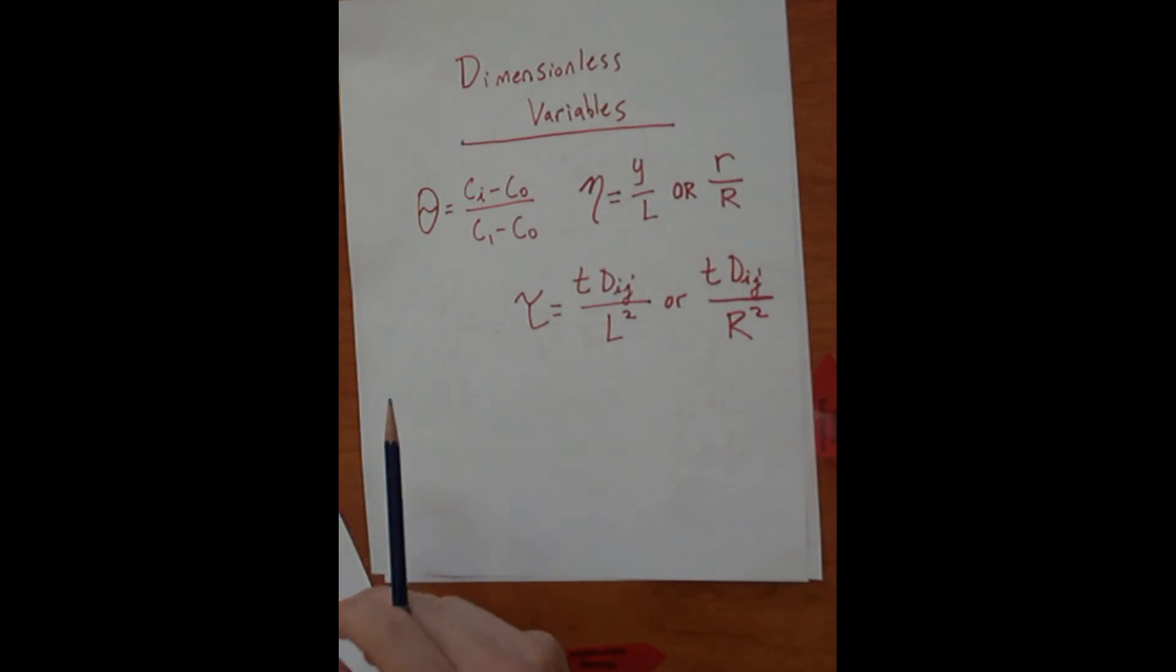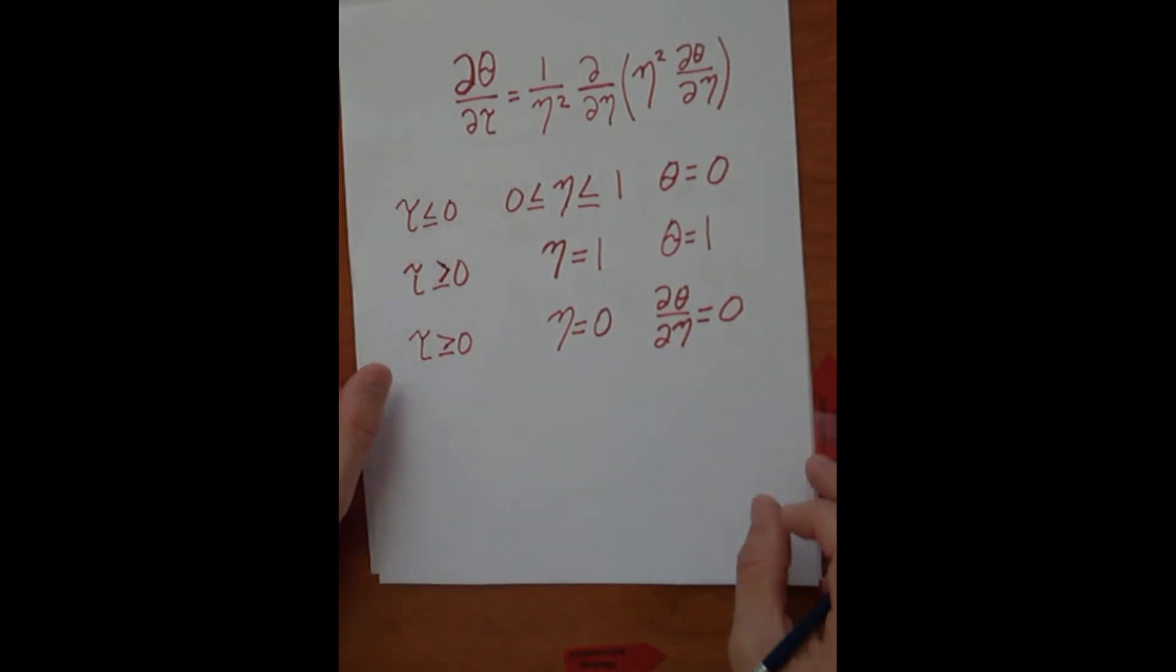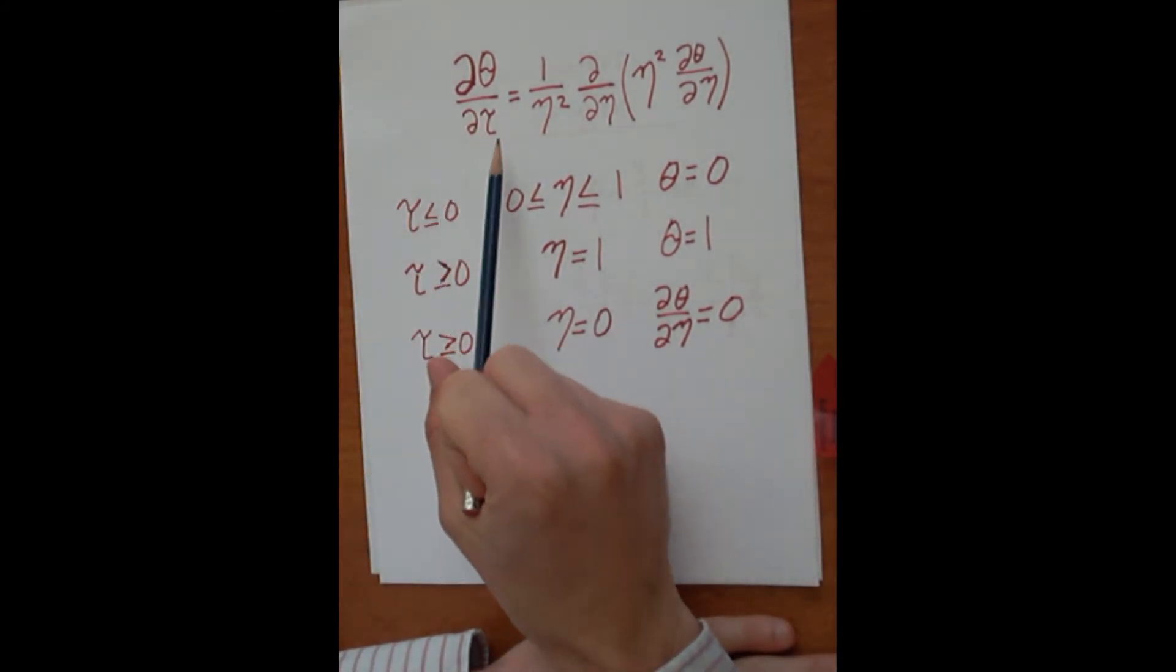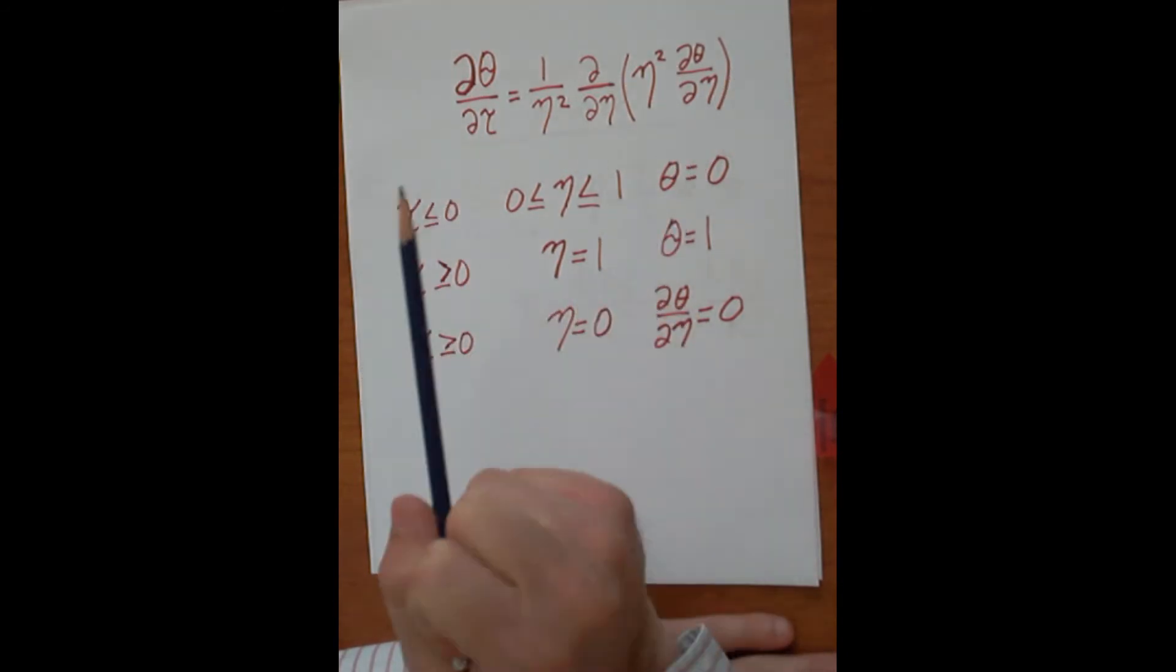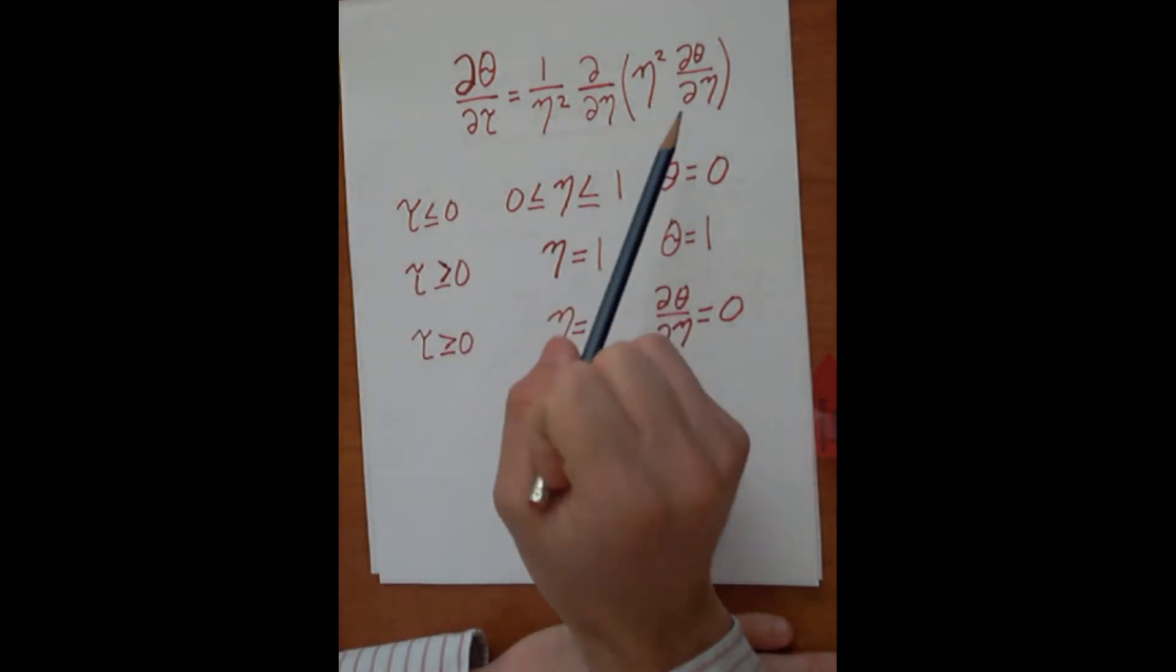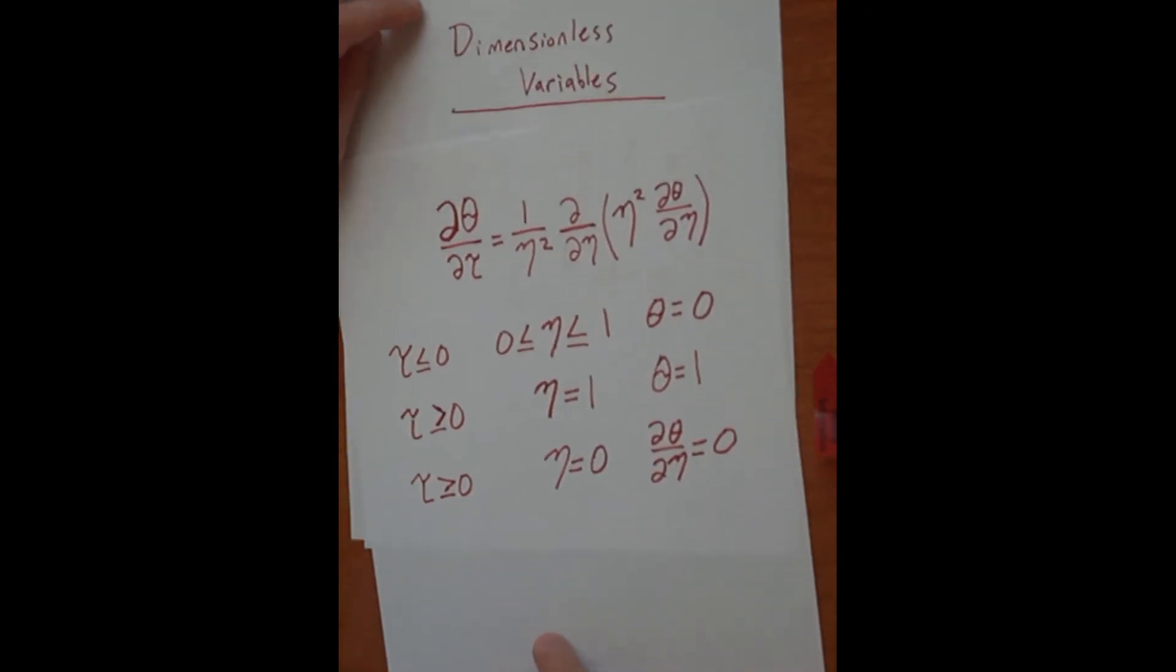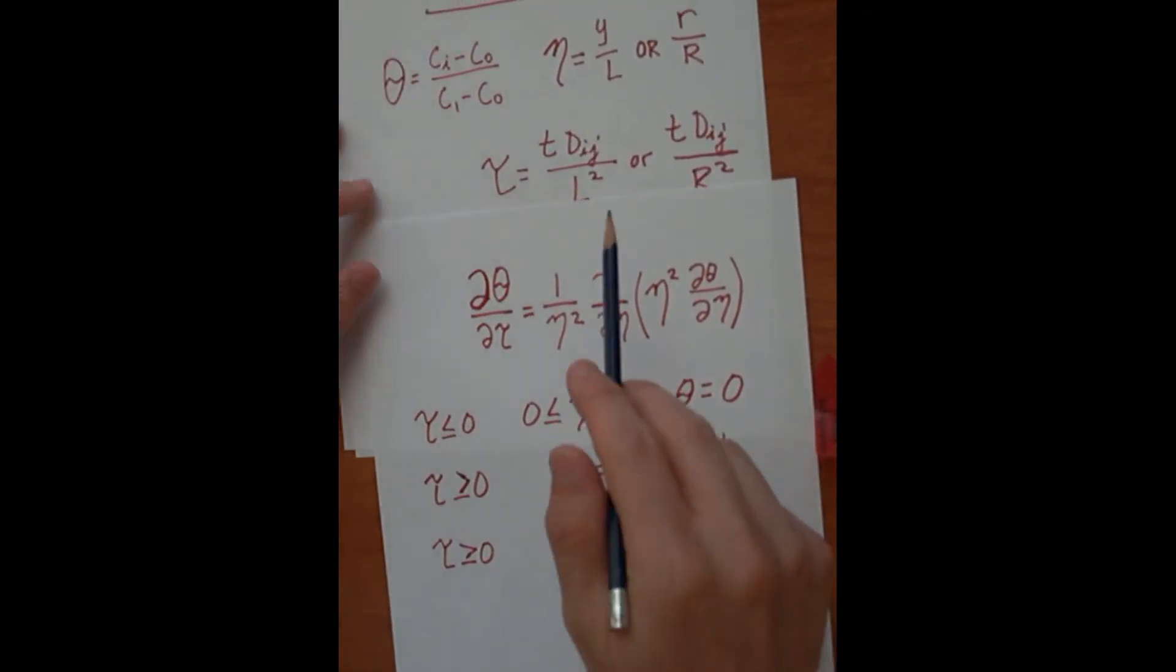So finally, we use these dimensionless variables to change our governing equation into non-dimensionalized terms here. This map is shown in the book. I'm not going to go over it, and just as we did before with the rectangular slab, the non-dimensionalized initial condition and boundary conditions can also be converted using these dimensionless variables.